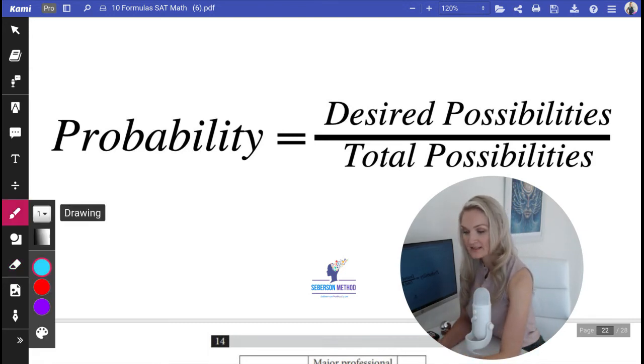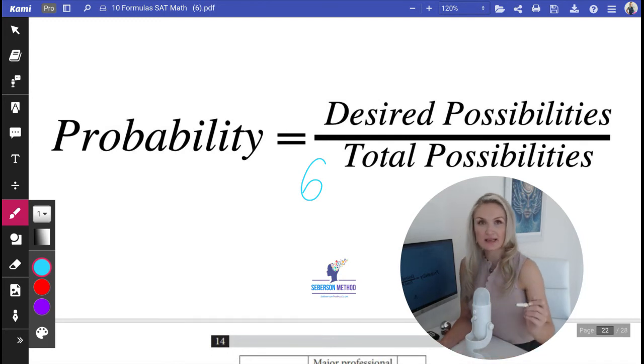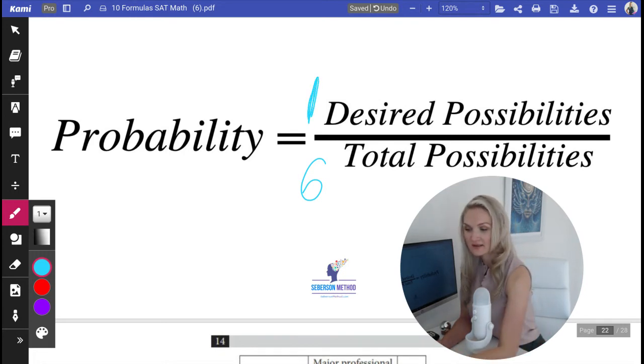The possibility of hitting a specific digit - one, two, three, four, or five - is one. Because when we roll it once, let's say we want to get a four.